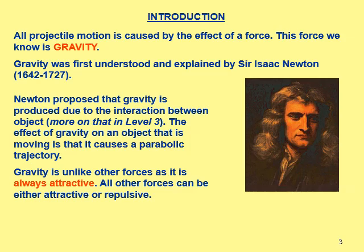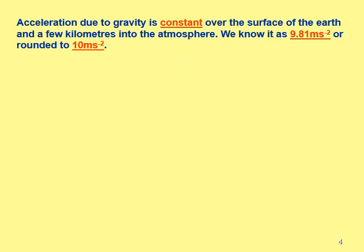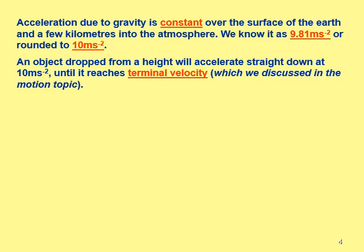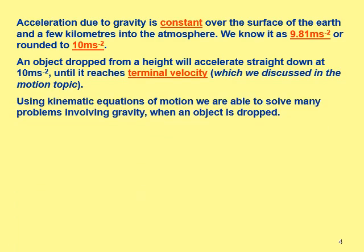Gravity is unlike any other force as it is only attractive. Think of electromagnetic or magnetic force — you have attraction but also repulsion. All other forces are either attractive or repulsive. Acceleration due to gravity is a constant around the surface of the Earth, known to have a value of 9.81 meters per second squared. We tend to round that to 10 meters per second squared.